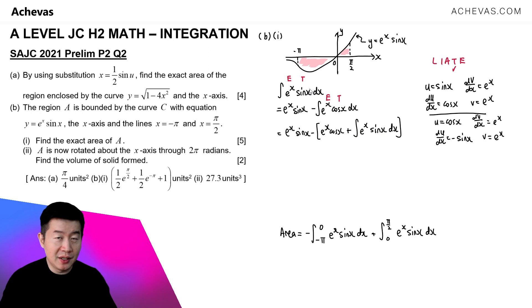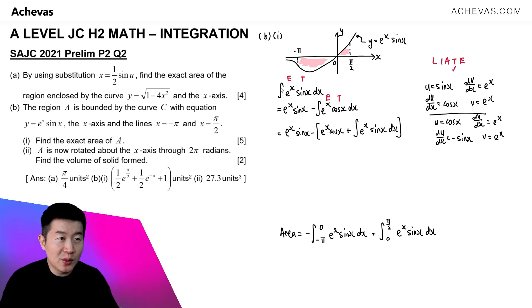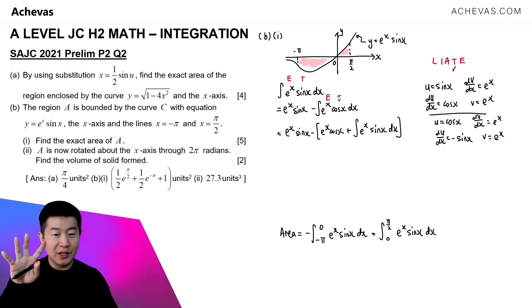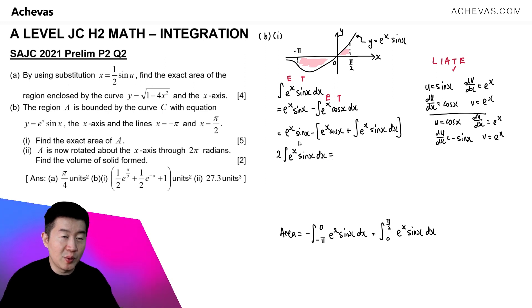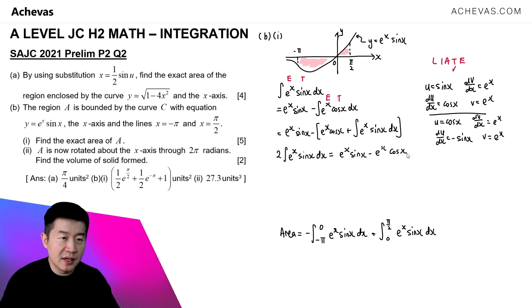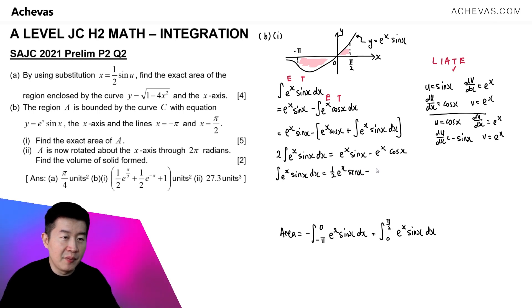The integral has repeated. As discussed, when the integral repeats, we bring both instances to the same side. On the left we have ∫eˣsin(x) dx, and on the right we have minus ∫eˣsin(x) dx. Bringing it over: 2∫eˣsin(x) dx = eˣsin(x) - eˣcos(x). Therefore ∫eˣsin(x) dx = ½eˣsin(x) - ½eˣcos(x) + c.